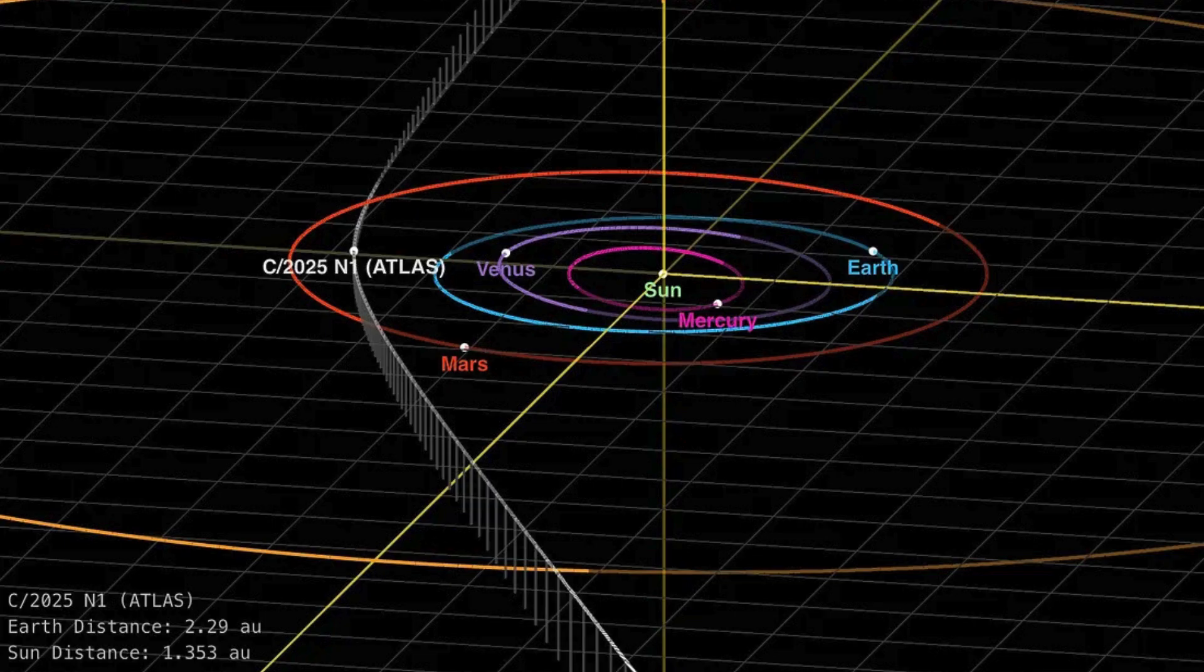Non-gravitational, meaning it's being pushed by something other than gravity. Precisely. And we have some critical new calculations about just how much mass would need to be involved if this is a natural thing. Plus, there's a big observation campaign coming up, kind of a definitive test. Okay. So is it evaporation, a natural comet explanation? Or does the data maybe point towards something like a technological signature?